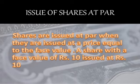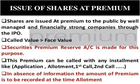Issue of shares at par: shares are issued at par when they are issued at a price equal to the face value; then the shares will be called as issued at par. For example, a share with face value of Rs.10 issued at Rs.10 — then the shares will be called issued at par. Issue of shares at premium: shares are issued at premium to the public by well-managed and financially strong companies through the IPO. When the called value is greater than the face value, then the shares are called issued at premium.